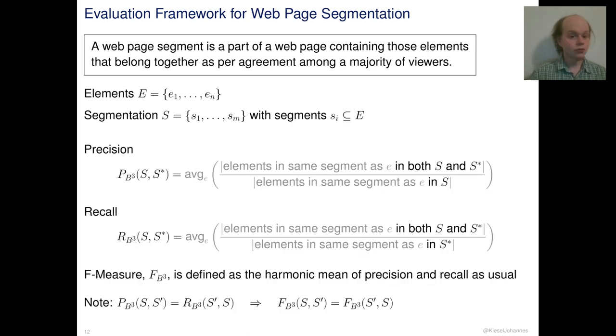To formalize these observations, we chose the b-cubed evaluation measures from clustering theory. These are three measures which calculate the similarity of a segmentation S to S-star, the ground truth segmentation. In a nutshell, precision is based on the elements that are segmented together in both segmentations, the true positives so to say, divided by the number of all elements segmented together in S.